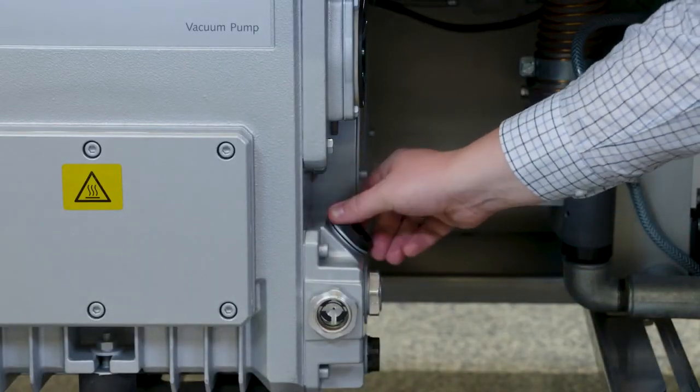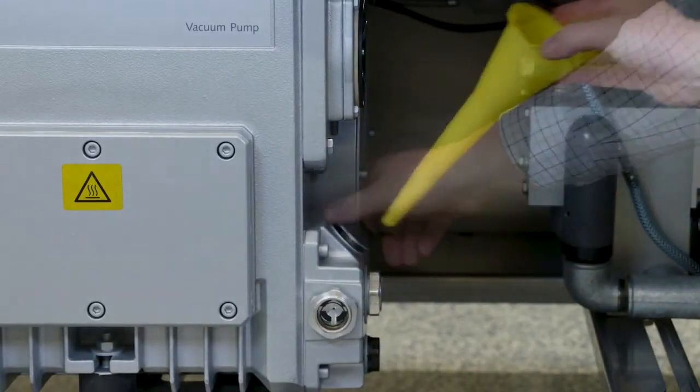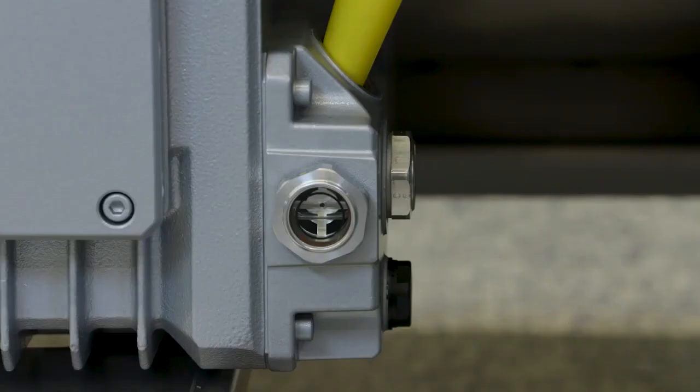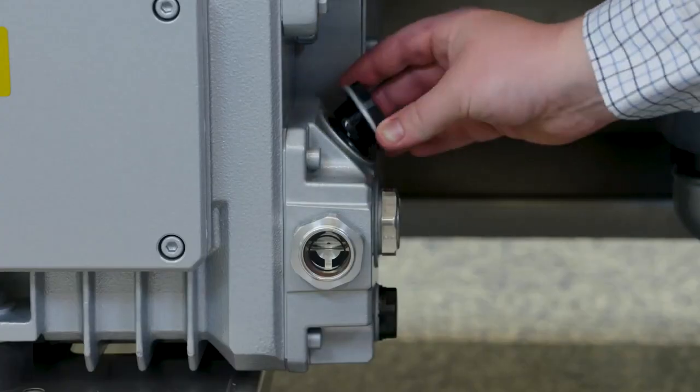Now remove the top oil cap. Insert a funnel and begin filling the pump with new oil. Once the oil level reaches three-quarter full on the sight glass, remove the funnel and replace the oil cap.